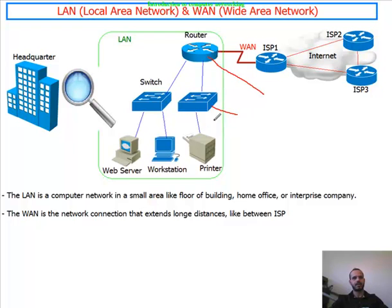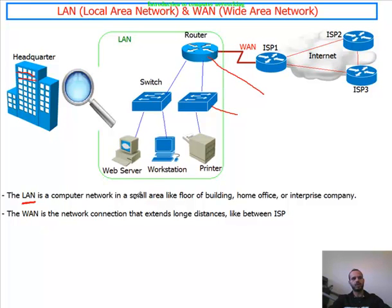The types of networks that exist include the LAN — the LAN stands for Local Area Network. The local area network is a computer network in a small area. It could be a floor of a building, two floors, or the whole building. A LAN is a network in a small geographical area, like home offices, enterprise companies, or a campus like in universities.